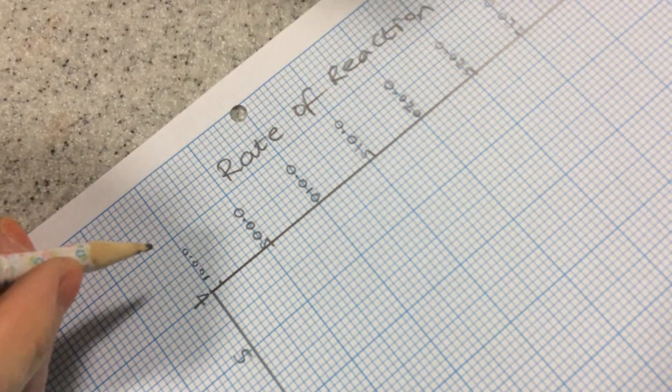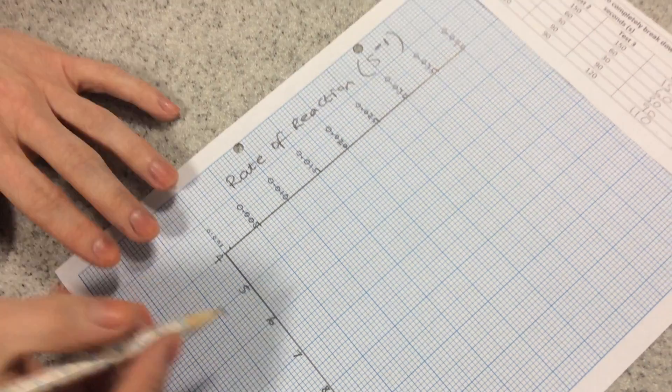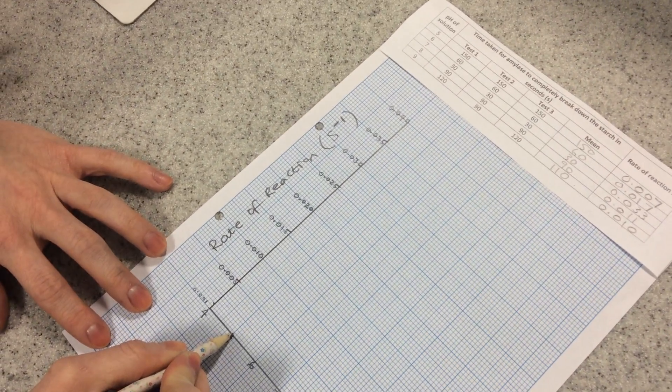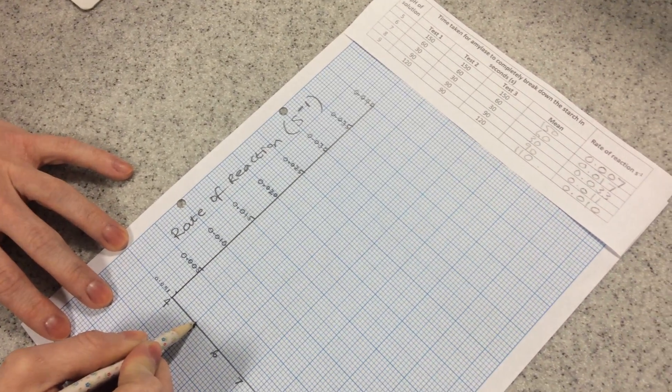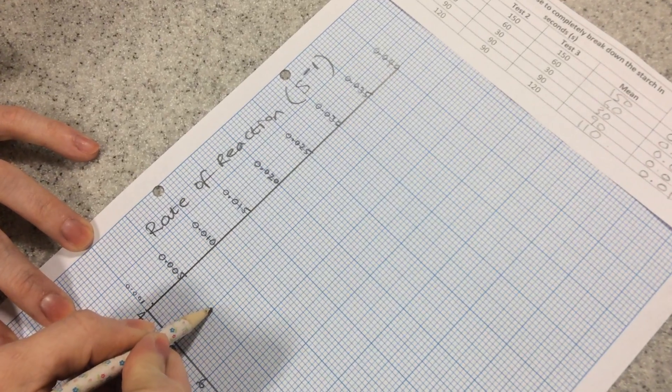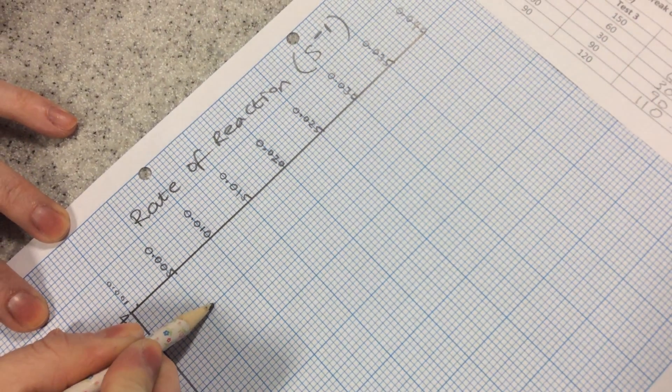So I'm going to plot my results like so. At pH 5, I had a rate of reaction of 0.007, so we go to 0.005, 6, 7.